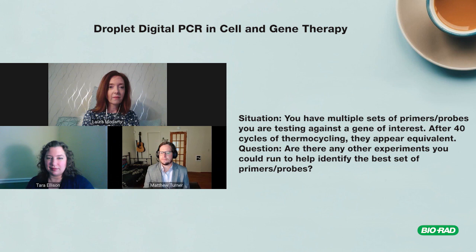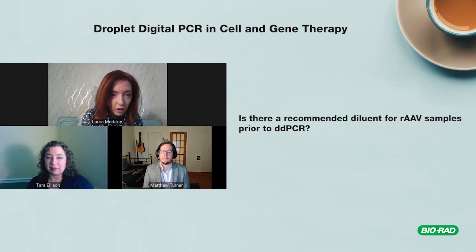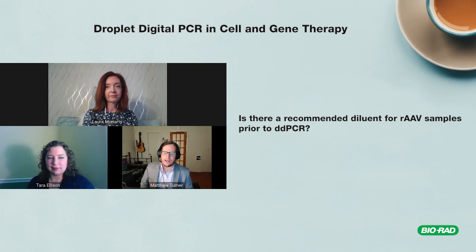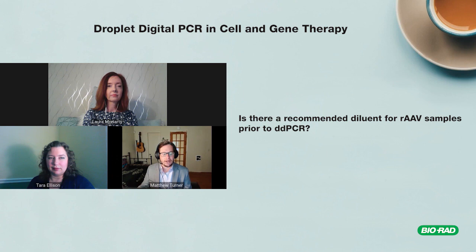Is there a recommended diluent for AAV samples prior to ddPCR? Because you may be doing large dilution series — perhaps 10^6 dilutions — you want to ensure those dilutions are linear and you're not losing sample to the tube walls. You should add some type of carrier; poly-A is typically what people add. The 2014 Lock paper and the 2019 Dobnik paper also recommend adding a little pluronic detergent to keep things from sticking.